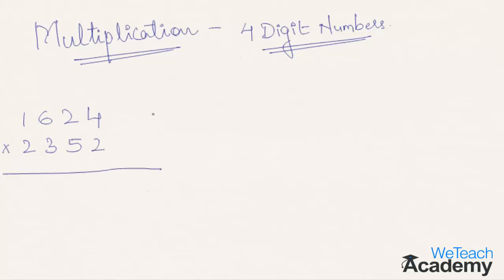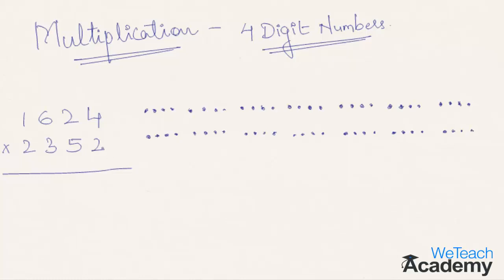As shown earlier with the two and three digit multiplication, let's draw the patterns in the form of dots which represent the digits of the numbers we are going to multiply. In this case we will draw seven sets of patterns which represent the seven steps of calculation. Let's start with the first step.